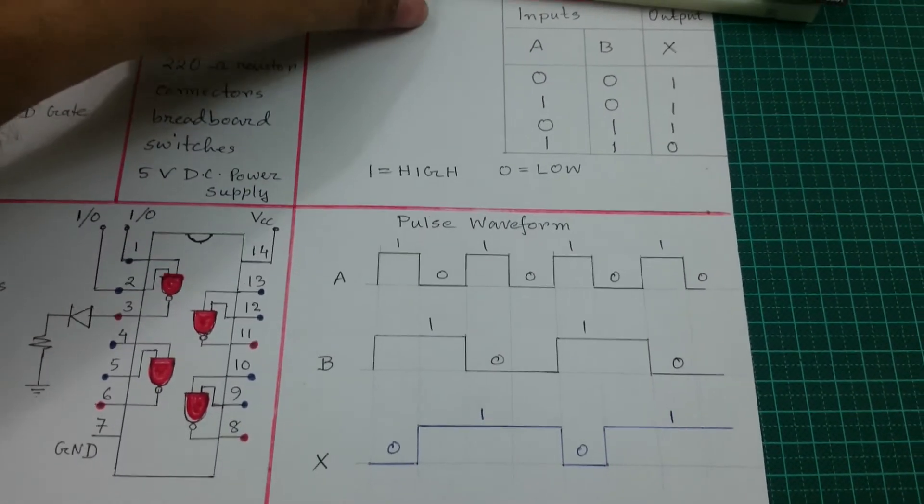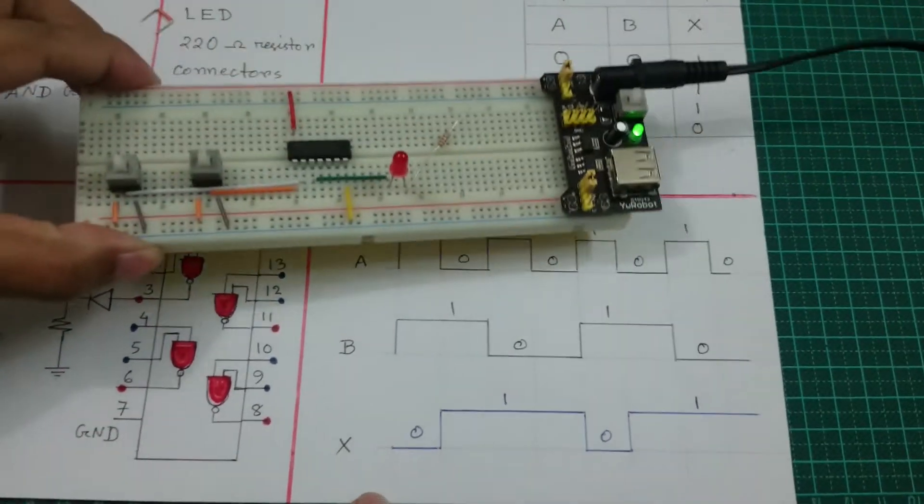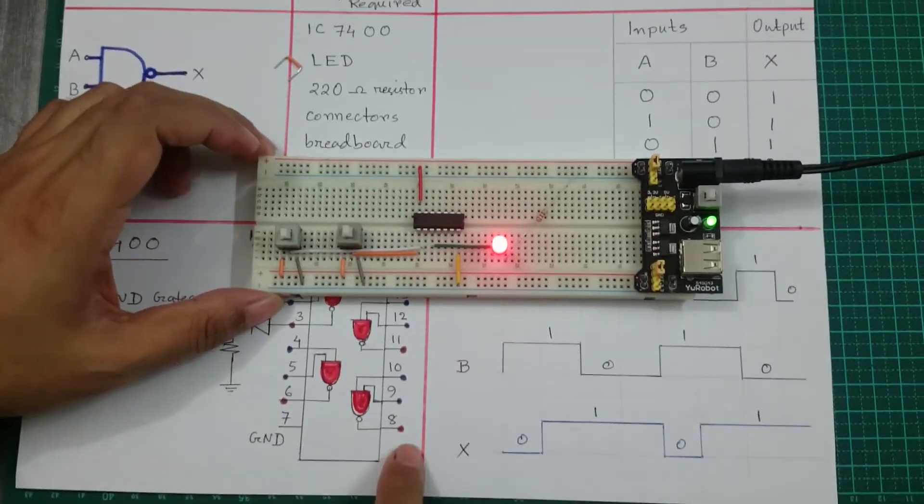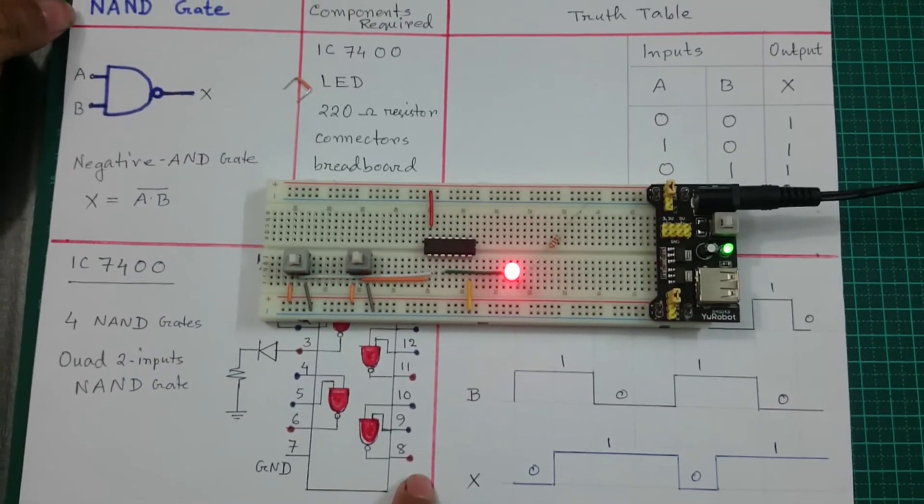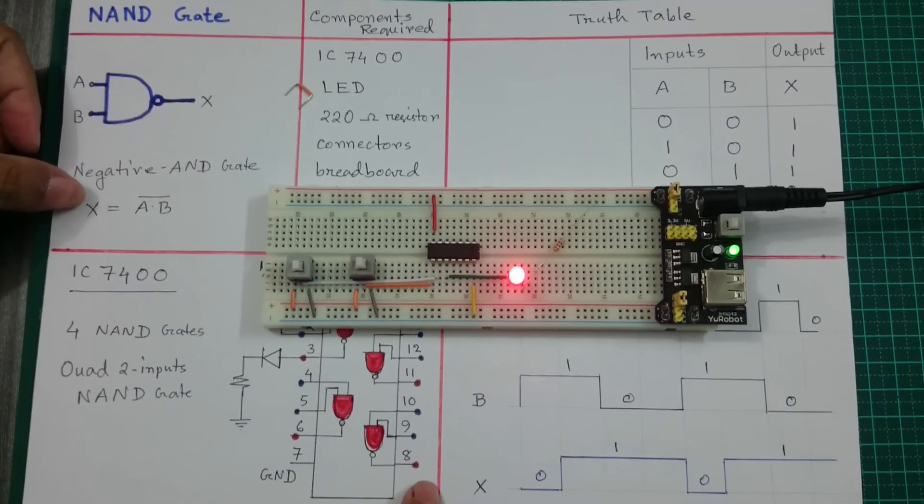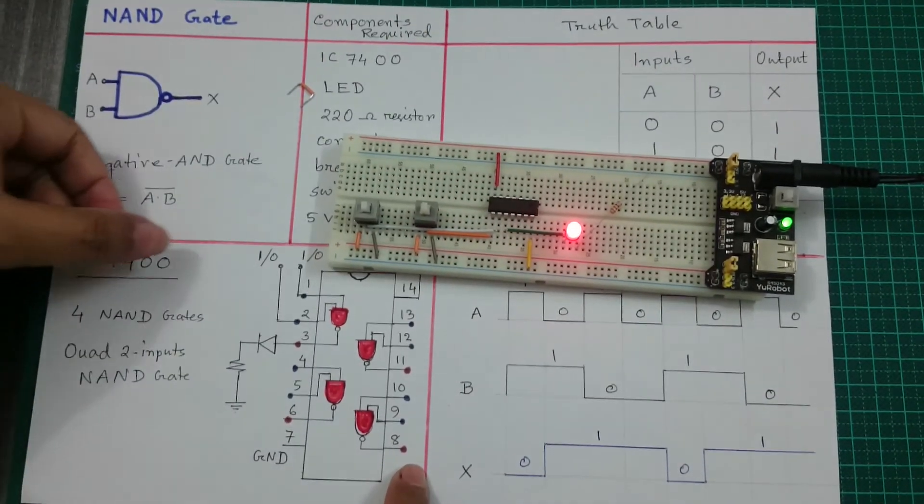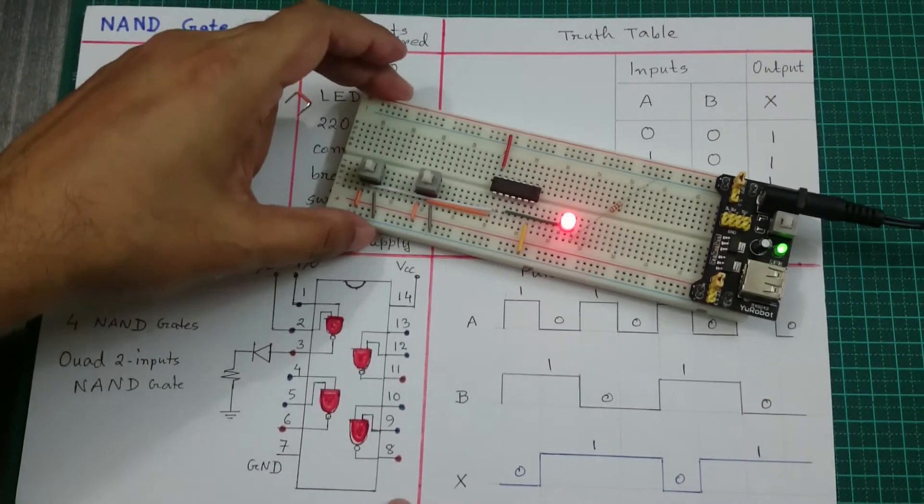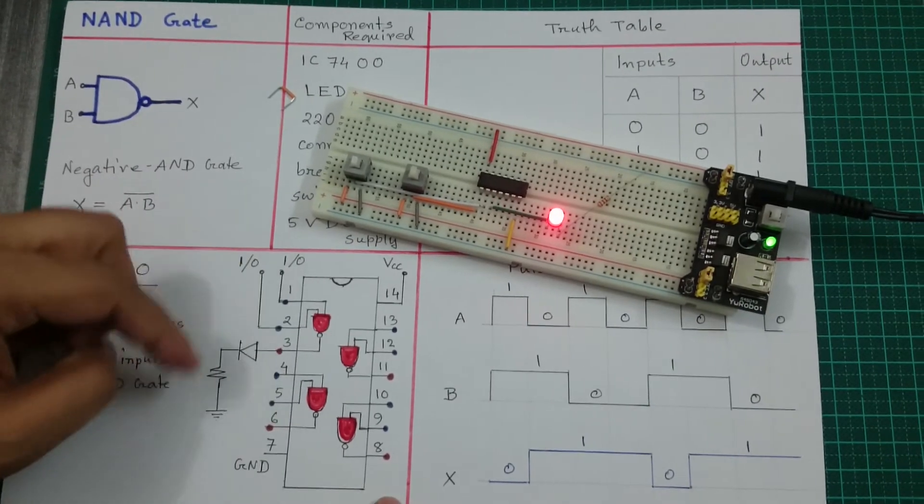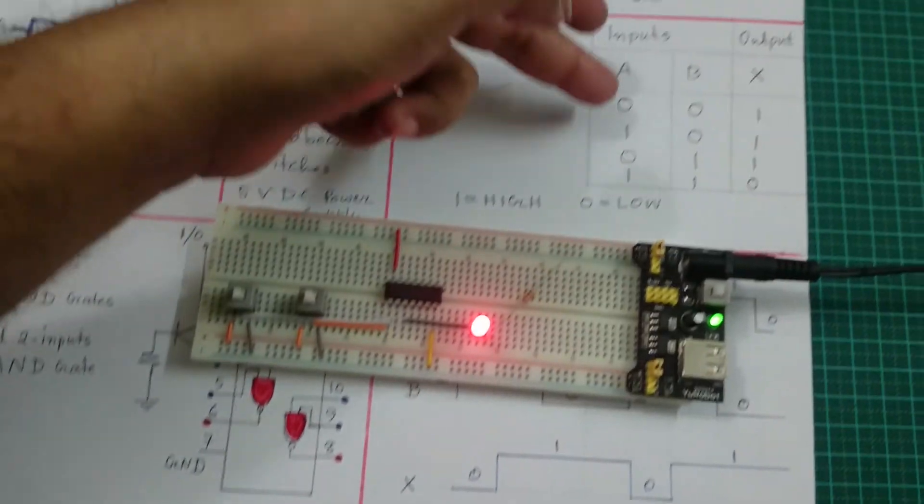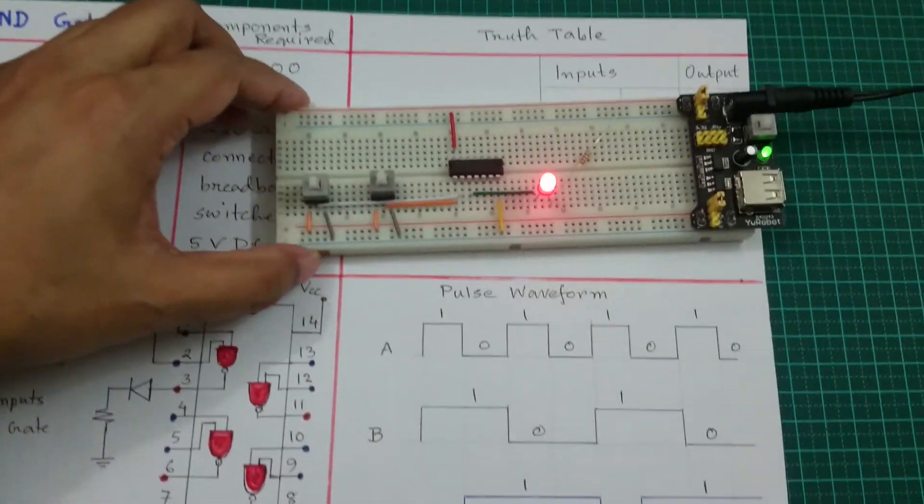In this tutorial, I explained the NAND gate and its Boolean expression using IC 7400. I explained the pin diagram, proved the truth table, and demonstrated the pulse waveform.